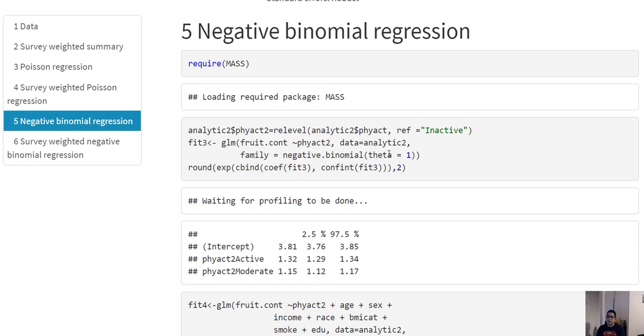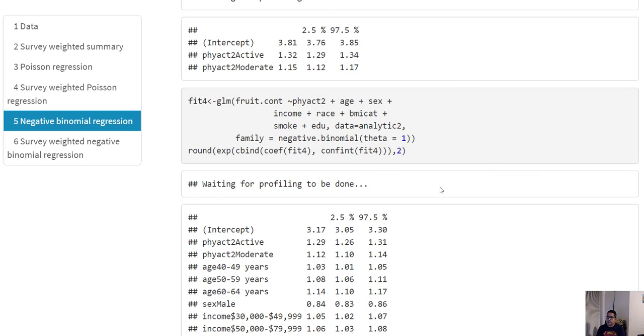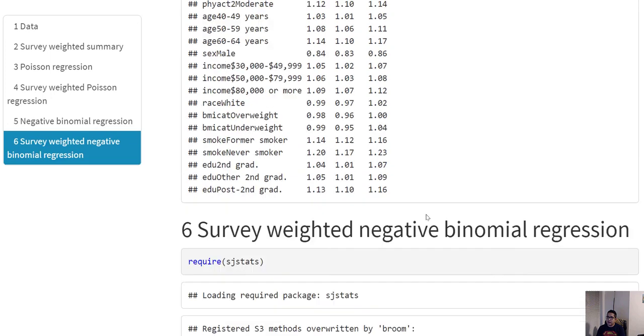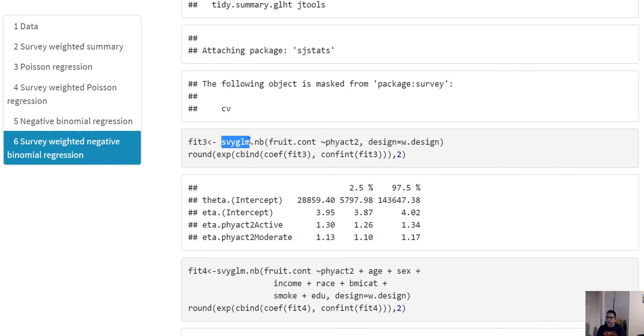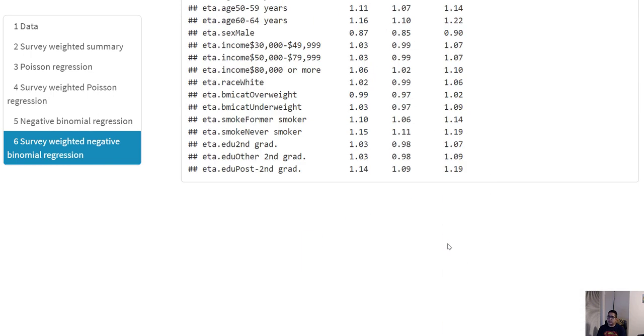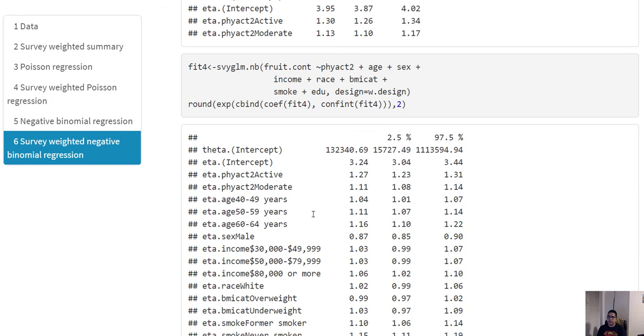And in terms of the survey data analysis, you have to use the svyglm.nb to get the similar type of estimate from negative binomial in a survey design.